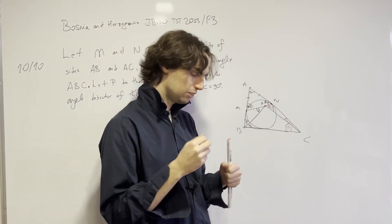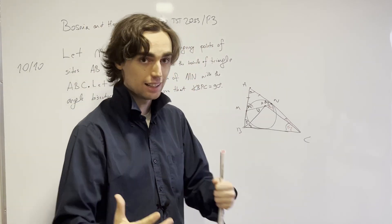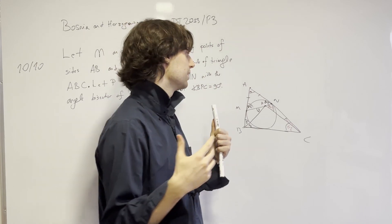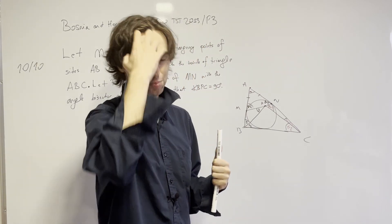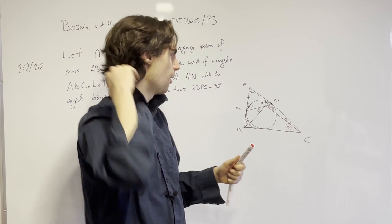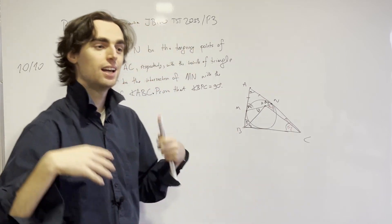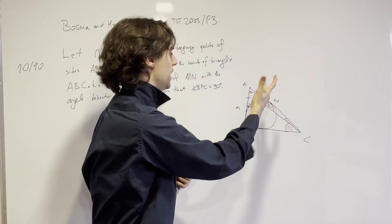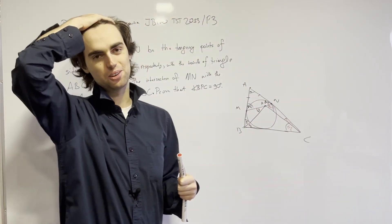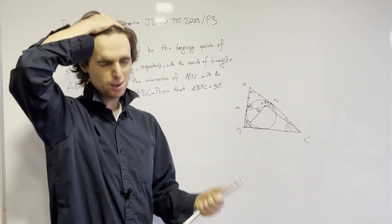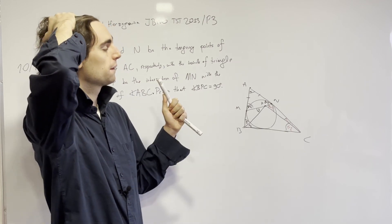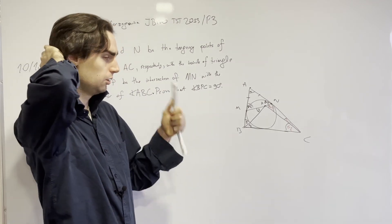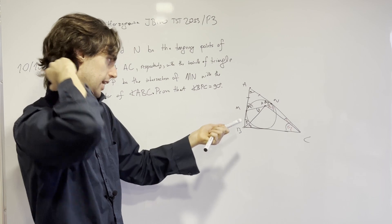Now the question is, how can we use that? We need to use that somehow. That's one way of thinking. If you didn't notice this before, I invite you to pause for another 15 minutes and ask yourself, how am I going to use the fact that these are on the incircle? Pause and ask yourself that.